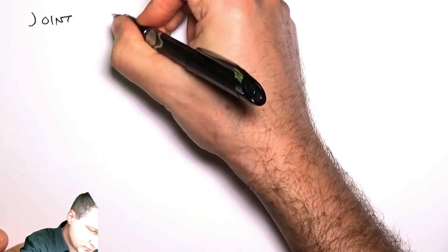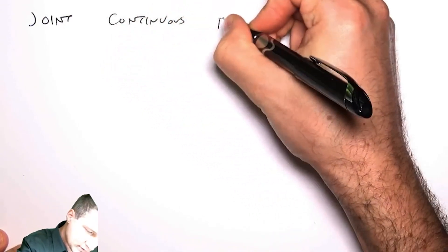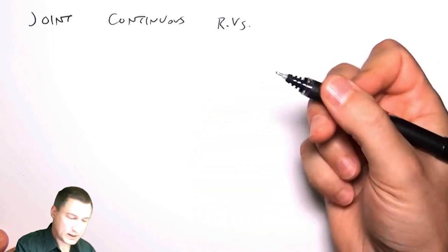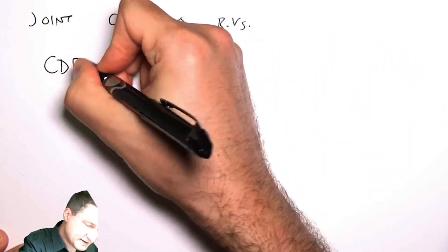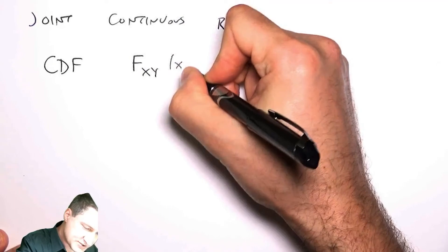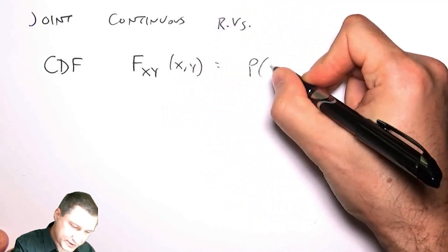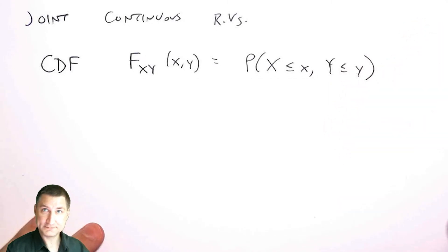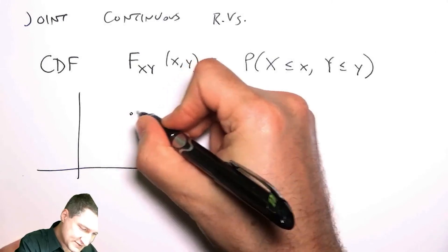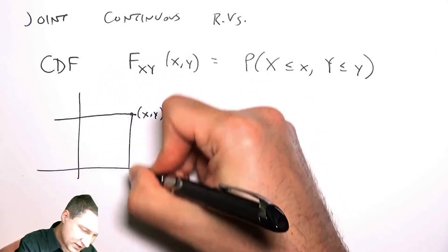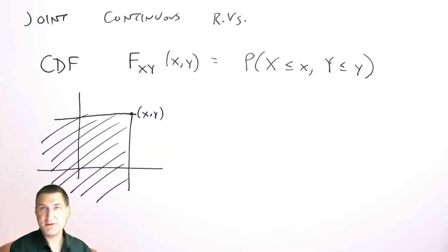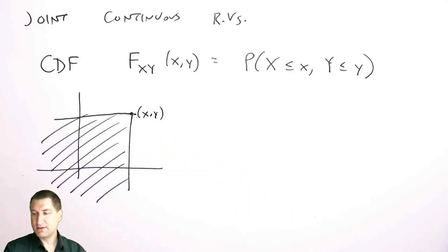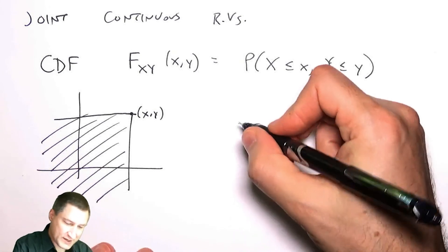Now I want to talk about how CDFs and PDFs work for continuous random variables in the joint case, with two random variables. The CDF definition is carried over from the one-dimensional world — it's the probability that I'm less than some value in x and less than some value in y. So that's like saying I have some point in x-y space, and I'm asking for the probability of this stripy region here.